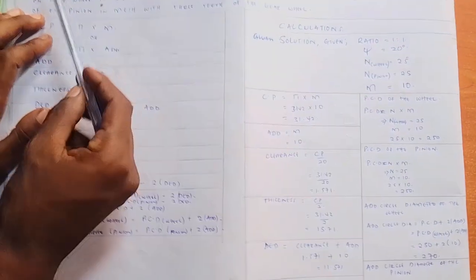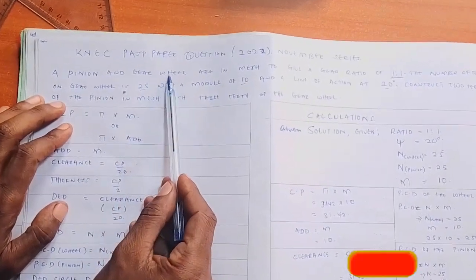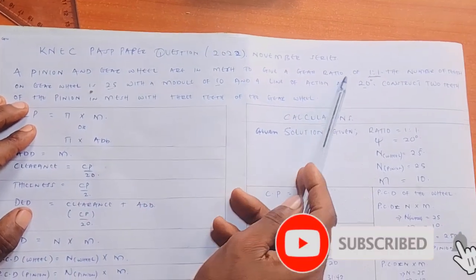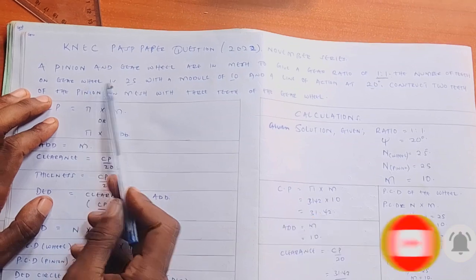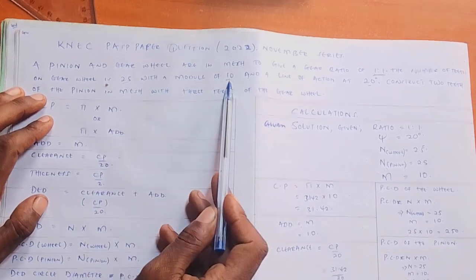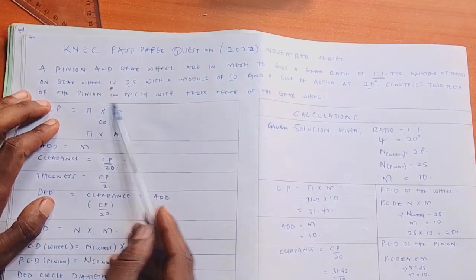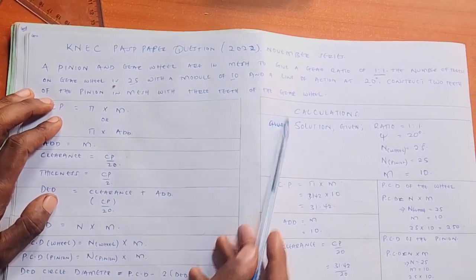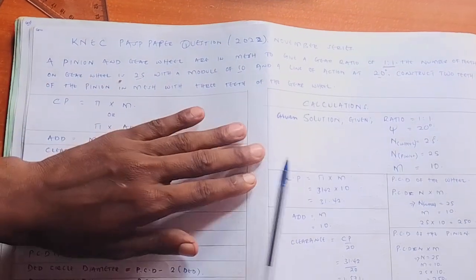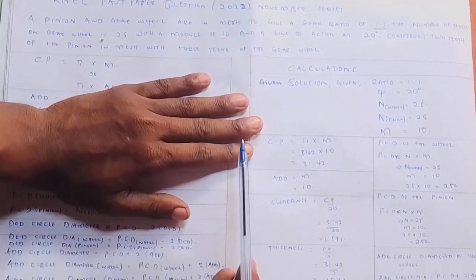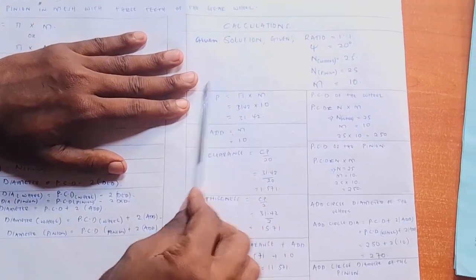The question asks: a pinion and gear wheel are in mesh to give a ratio of 1 to 1. The number of teeth on the wheel is 25, with a module of 10 and a line of action at 20 degrees. Construct two teeth of the pinion in mesh with three teeth of the gear wheel. I will now show you how to calculate all these things and then show you how to construct.